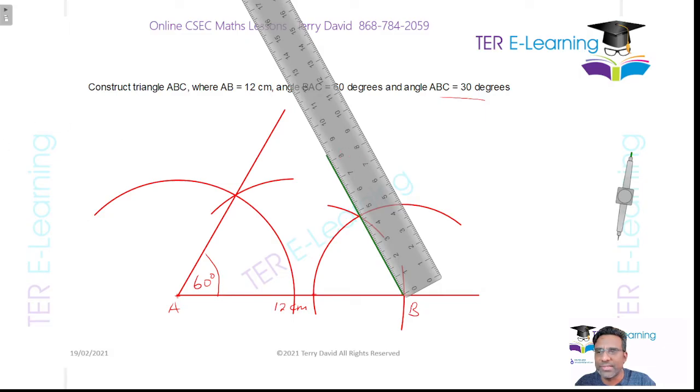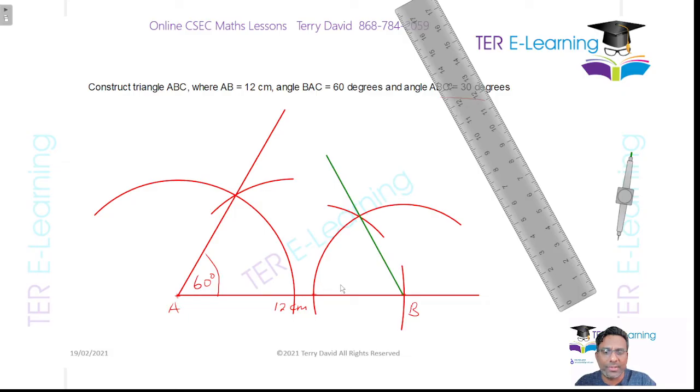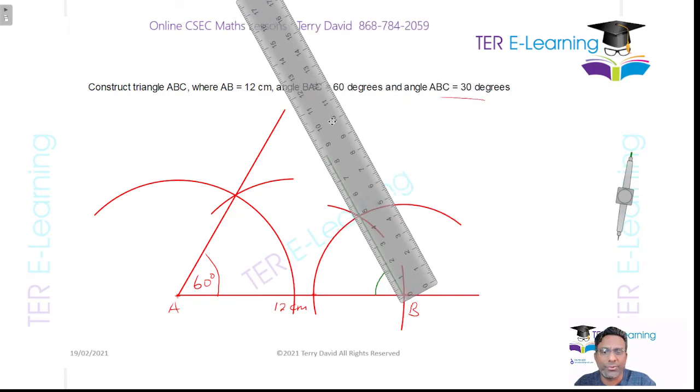The only reason for me showing you this is so you understand that I need to bisect this angle. So that angle here that I've just constructed is actually 60 degrees, but I don't want 60 degrees, I want 30 degrees. So therefore all I need to do is to bisect that angle.